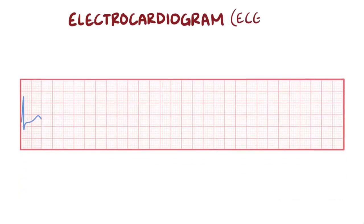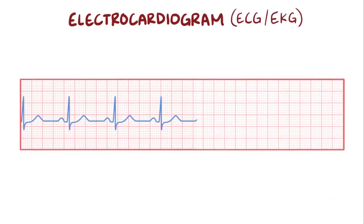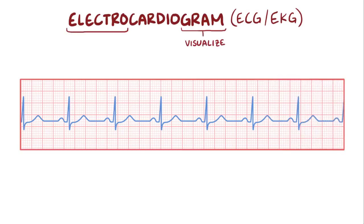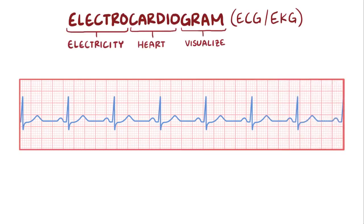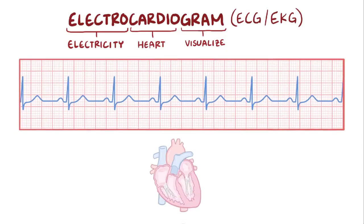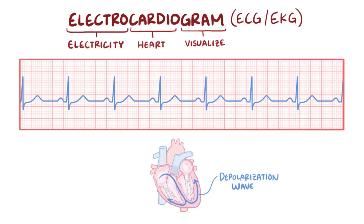An electrocardiogram, or ECG, or the Dutch or German version of the word EKG, is a tool used to visualize the electricity that flows through the heart. An ECG tracing specifically shows how the depolarization wave moves during each heartbeat, which is a wave of positive charge. And the way it looks depends on the set of electrodes you're using.